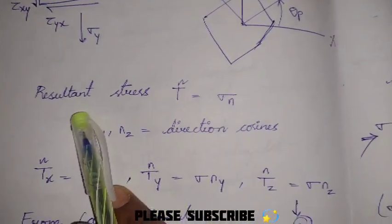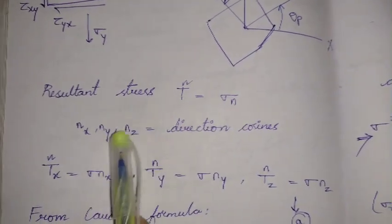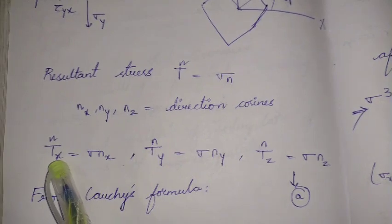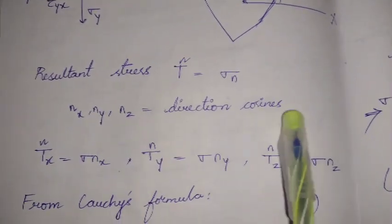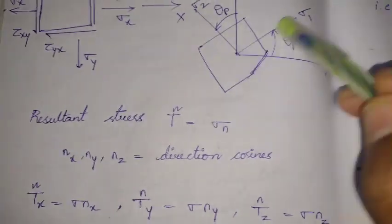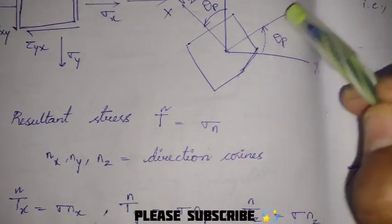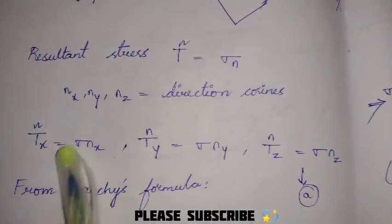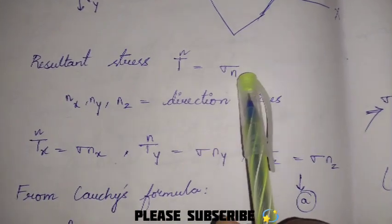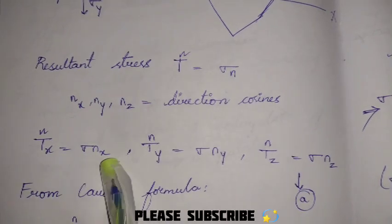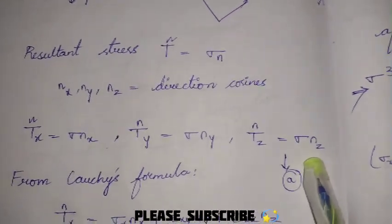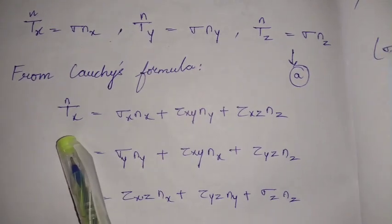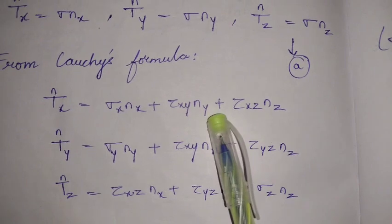Whenever we talk about the resultant stress, nx, ny, nz are the direction cosines, so depending upon the direction this would be changing. For the resultant stress in x direction, we multiply by nx, in y direction by ny, in z direction by nz. Whenever we see stress acting on an inclined plane we resolve it as sigma*cos(theta) and sigma*sin(theta), so similarly we multiply the direct stress with the direction cosine.